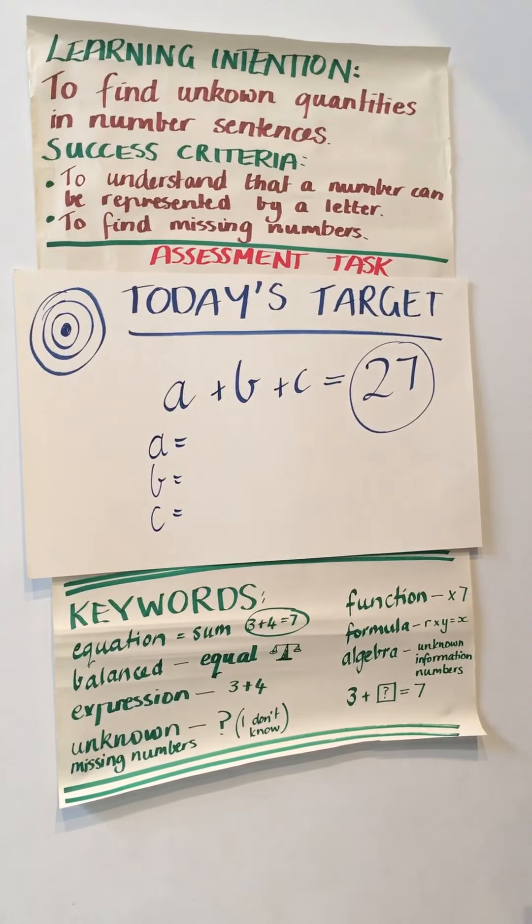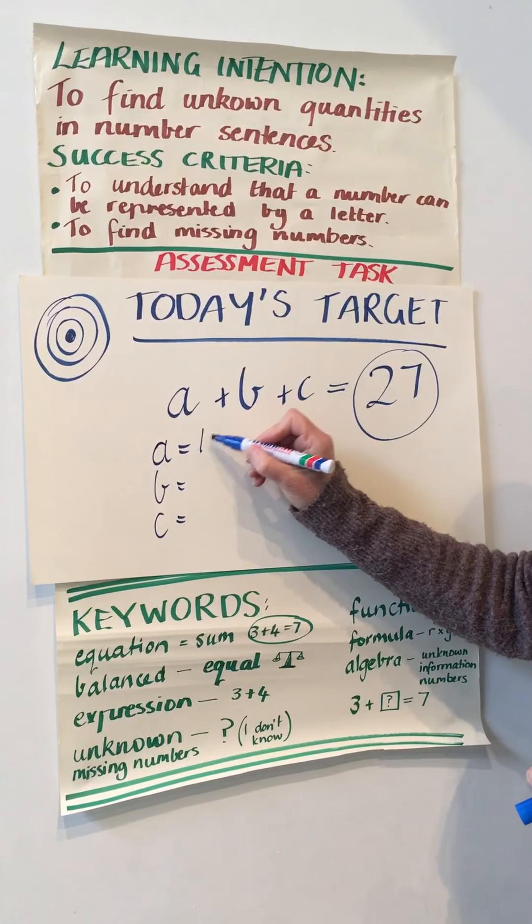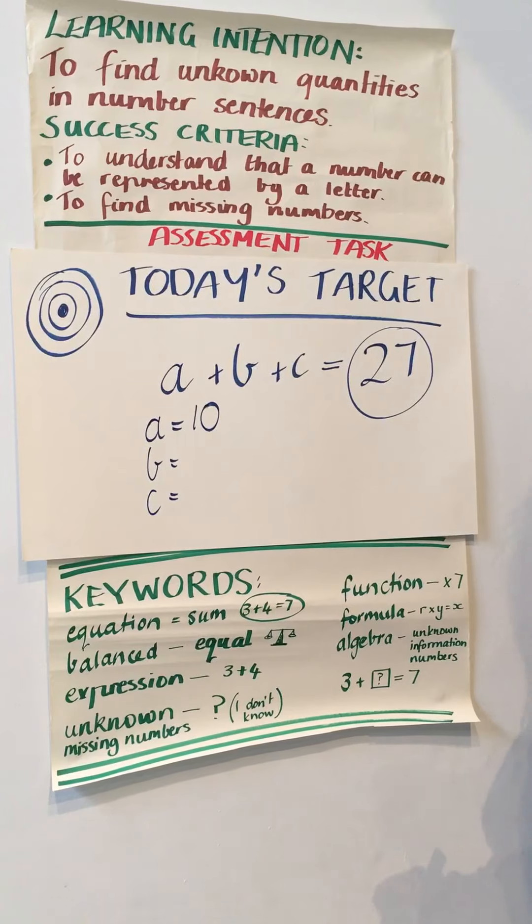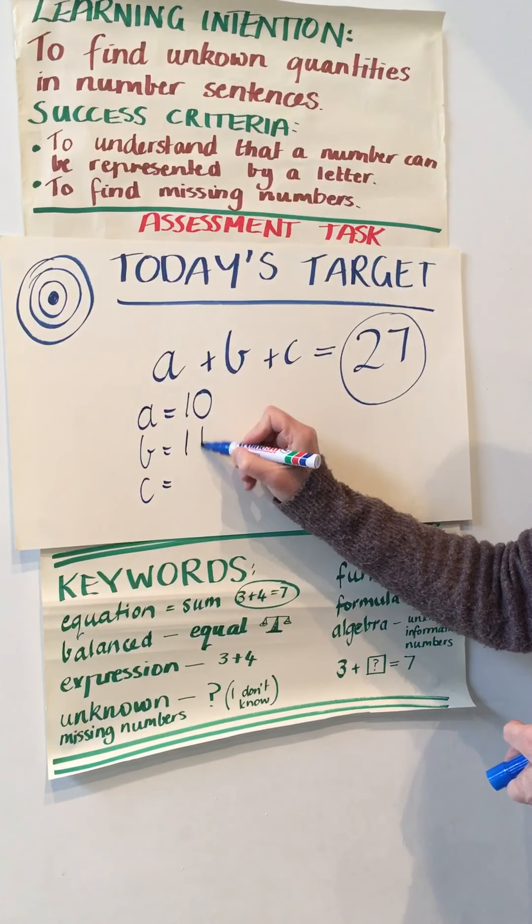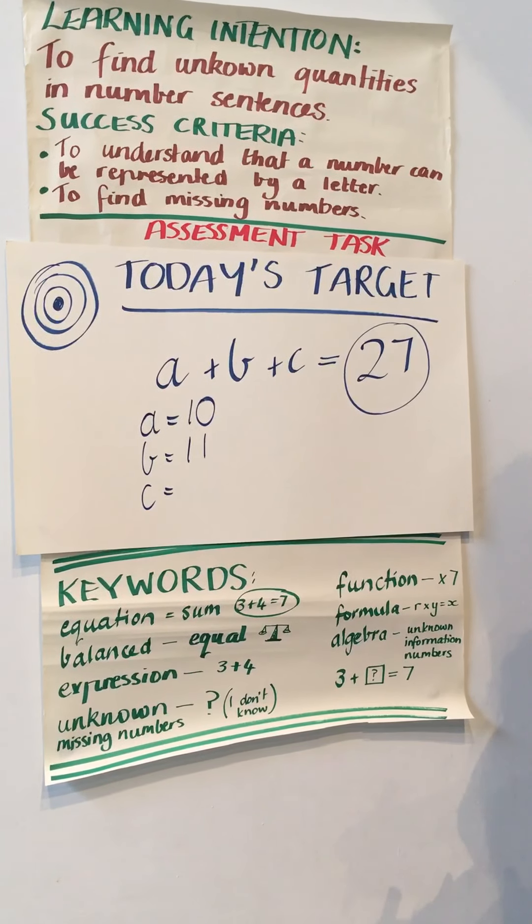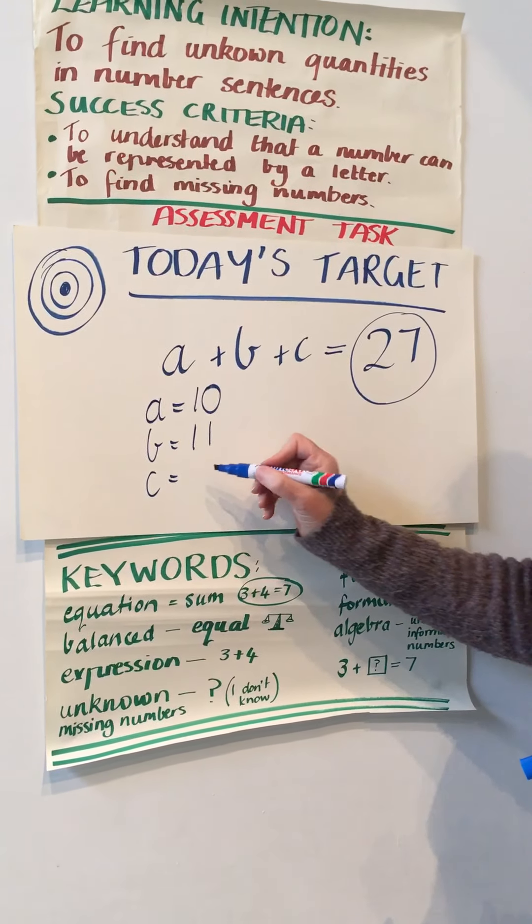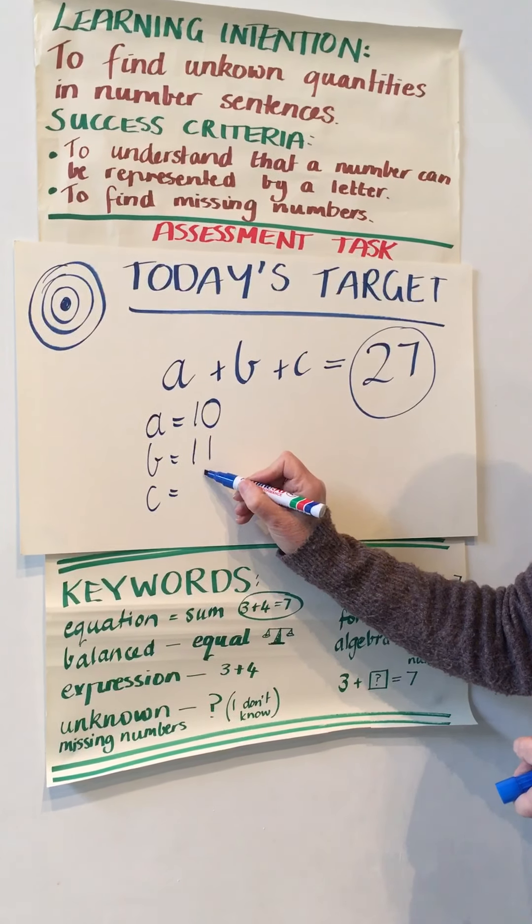Let me see. In my head I'm thinking A could be 10, B could be 11. How much does that get us to, Liv? 21. So that means that C must be? 6.